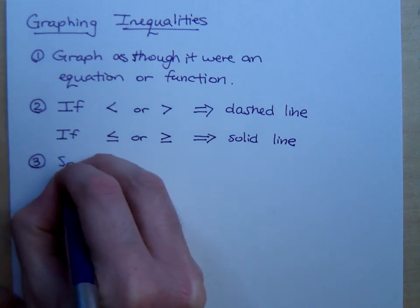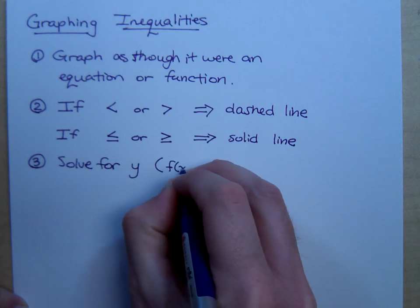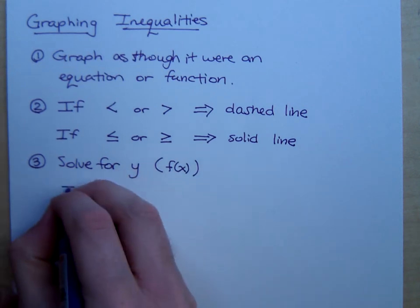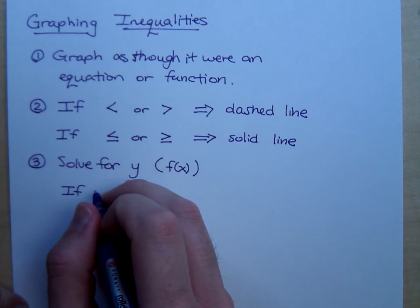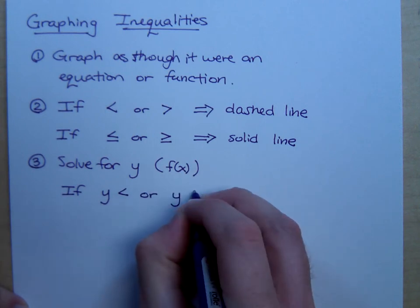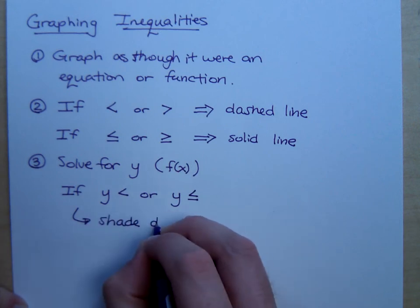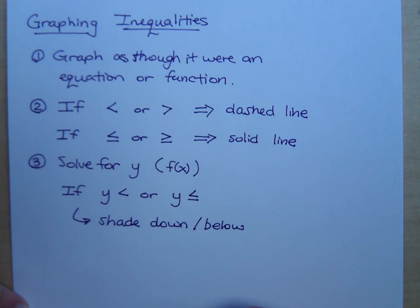Then, the third thing here is that you need to solve for y. And remember that y is the same thing as having f(x). So if I give you something that's f(x), and you're trying to graph that guy as an inequality, I understand that f(x) is going to be the same thing as y. So when you solve for y, and that's probably what most of you will do when we deal with linear inequalities, if you see that y is less than or y is less than or equal to, that means that we will shade down or shade below. We're going to shade below whatever that graph is that you have.